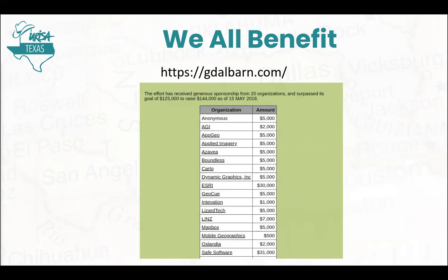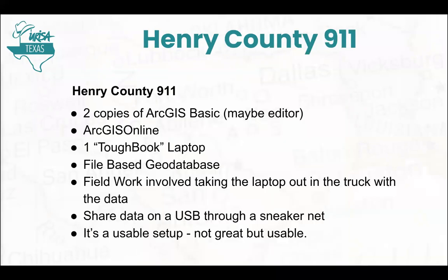GDAL needed some updating and some money. There was a push in 2018 to ask people: we need some money, you're all benefiting from this — let's donate. They raised $144,000. A lot of different people donated — Safe Software / FME donated $31,000. This weird company, Esri, donated $30,000. Yes — Esri donated to the open source crowd. They use GDAL on the back end for ArcPro and ArcMap — it handles all their raster functionality. They're on the bandwagon too, they just don't talk about it a lot. Out of this grew the new GDAL organization to help them move along and have some structure.